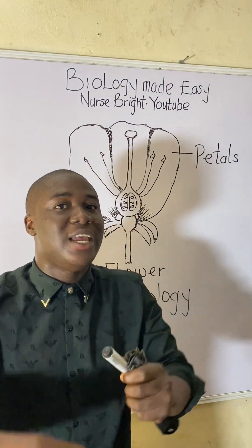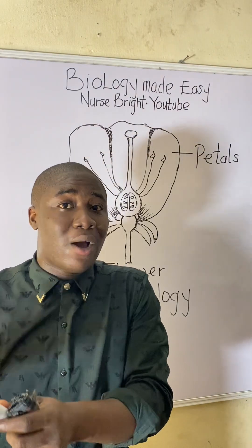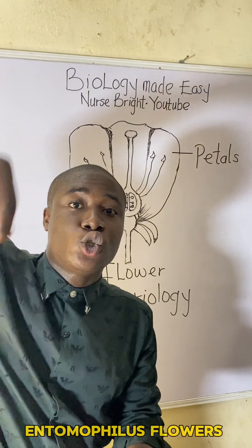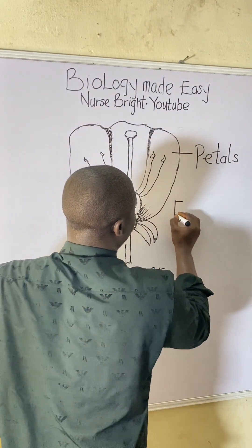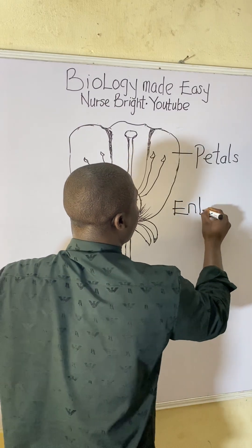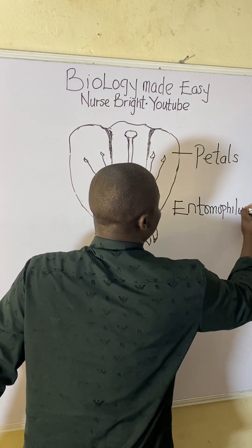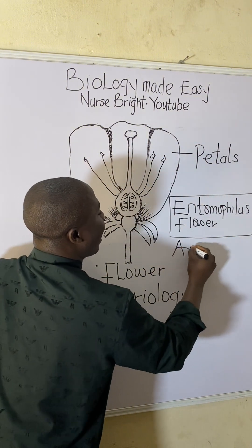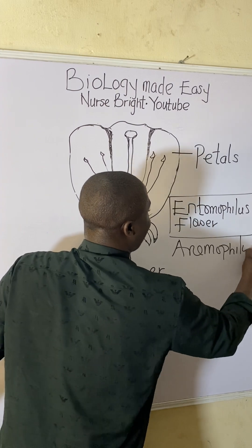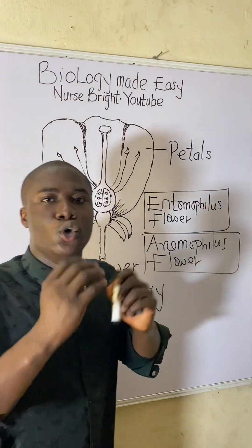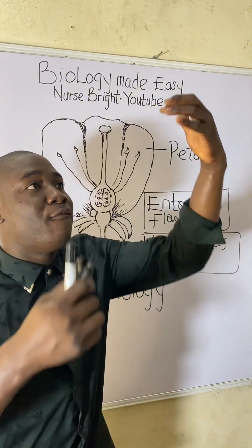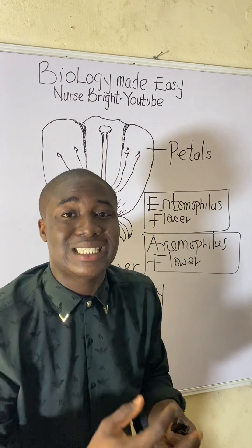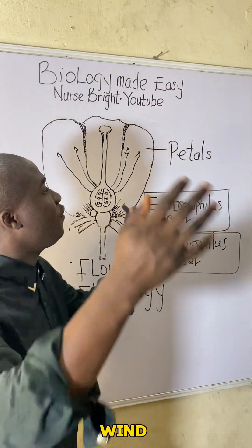This flower can be insect-pollinated. We also have flowers that can be wind-pollinated. Insect-pollinated flowers are called entomophilous flowers, while wind-pollinated flowers are called anemophilous flowers.